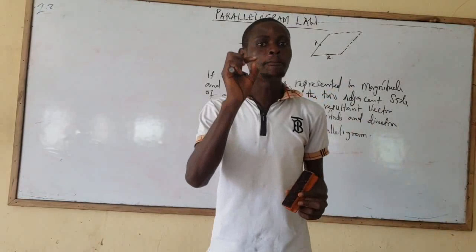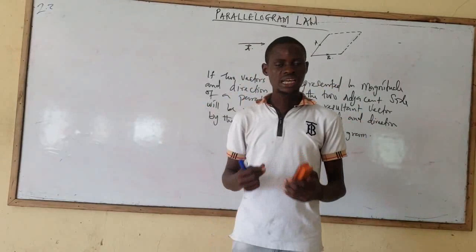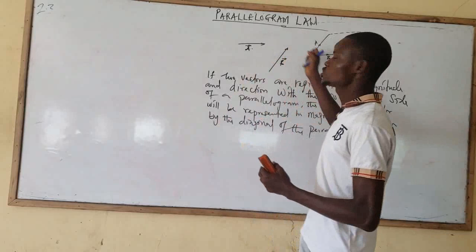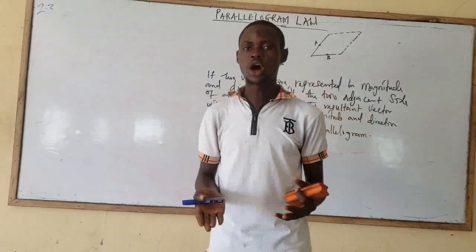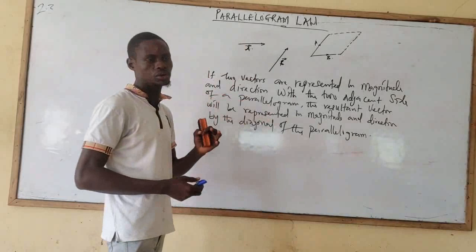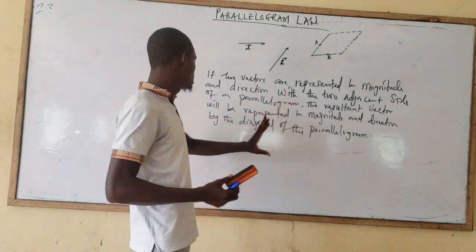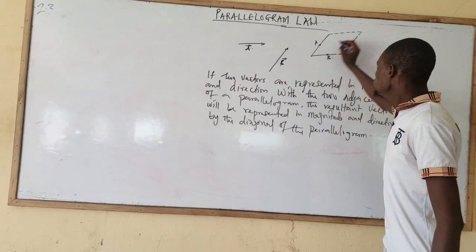It is a vector which will have the same effect as the other two vectors taken together — that's what we call a resultant vector. For example, if the vectors we are adding together are force vectors, then the resultant must surely be a force. The resultant will never be acceleration or velocity. Simply means if I'm adding velocities together, I'm going to get a velocity. So coming back to this parallelogram, the resultant vector will be represented in magnitude and direction by the diagonal of the parallelogram.